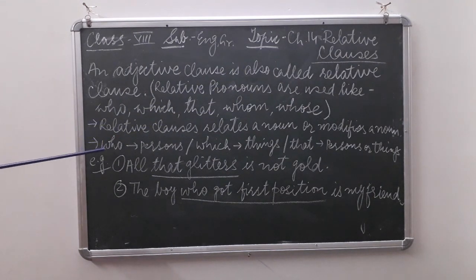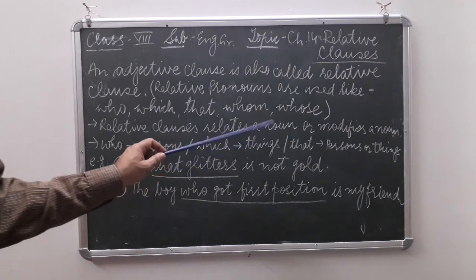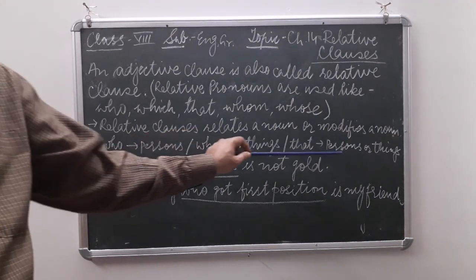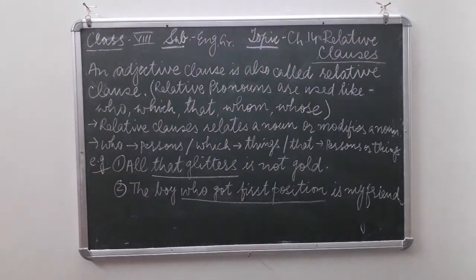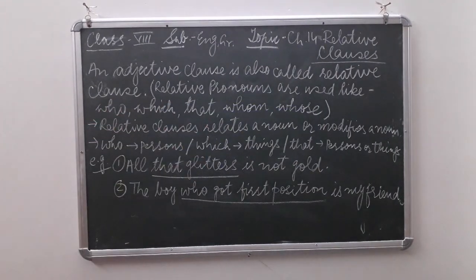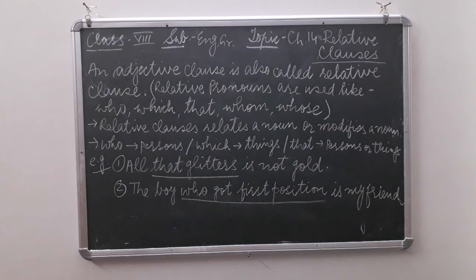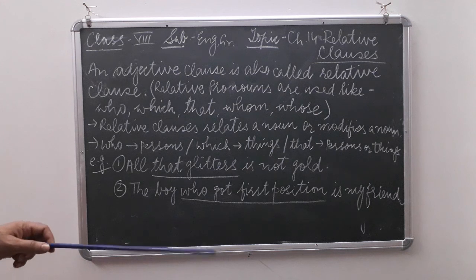Remember: 'who' is used for persons, 'which' is used for things — non-living — and 'that' can be used for both persons or things. 'Whom' and 'whose' are also used for persons. A relative clause relates or modifies a noun in the sentence.